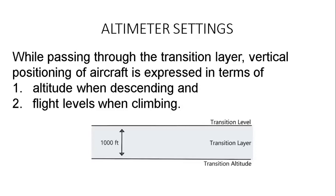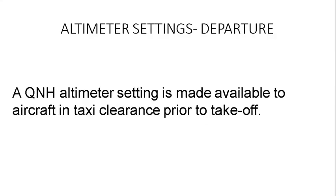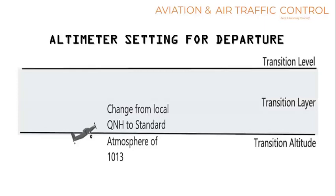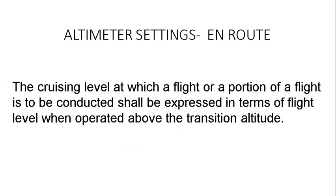Vertical position of aircraft is expressed in terms of altitude when descending, and in terms of flight level when climbing above transition altitude. For departure, a QNH altimeter setting is made available by ATC to aircraft during taxi clearance prior to takeoff. Altimeter setting for departure: set QNH at the time of startup or taxi, then change from QNH to international standard 1013.2 hectopascal when climbing passing transition altitude. During en-route, the cruising level shall be expressed in terms of flight level when operating above the transition altitude.